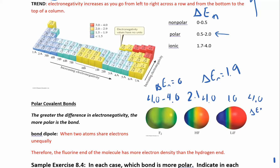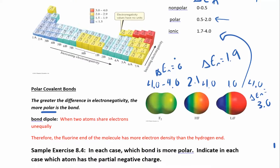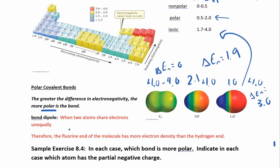HF isn't ionic because it's two nonmetals, not a metal and a nonmetal — so it's a polar covalent bond. Lithium fluoride, however: lithium has an electronegativity of 1.0 and fluorine is 4.0, so the difference is 3.0, which is definitely in the ionic range. You can use this table to figure out whether a bond is polar, nonpolar, or ionic. The bigger the difference in electronegativity, the more polar the bond — and a really large difference with a metal and nonmetal gives you an ionic compound.